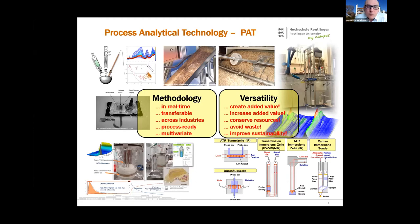You will learn to monitor manufacturing processes in real time by applying inline process analytical technology — so-called PAT methods. PAT is analytics that takes place directly in the production line, providing real-time insights that can be used to control the process. PAT may ultimately lead to automation and flexible, adaptive manufacturing. PAT is an essential toolbox for the digitalization of industrial processes — think about Industry 4.0. With this know-how, you will conserve resources, use less energy, produce less waste, and improve the overall sustainability of chemical, biochemical, or pharmaceutical products.